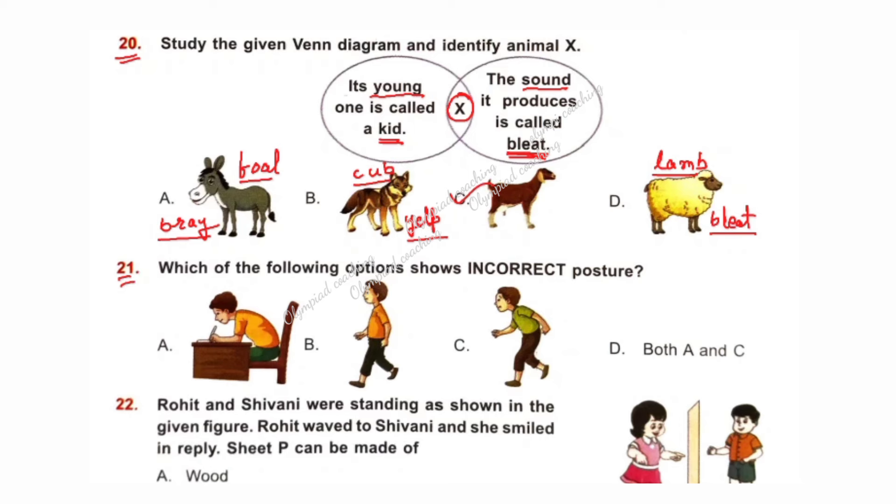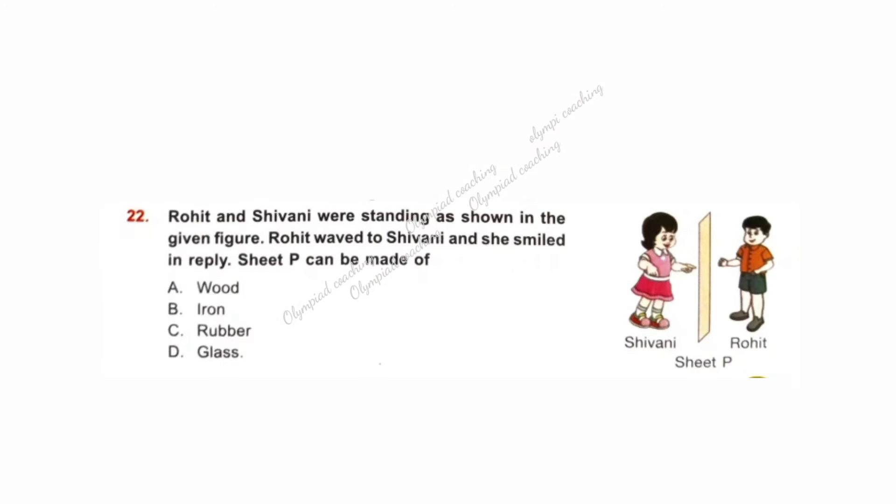Question number 21. Which of the following options shows incorrect posture? Option A and C incorrect. According to this, option D is correct: Both A and C. B is a correct posture. Question number 22. Rohit and Sivani were standing as shown in the given picture. Rohit waved to Sivani and she smiled in reply. Sheet P can be made of? Option D is correct: Glass. Both Sivani and Rohit could see each other. So, sheet P must be transparent. And glass is transparent. Option D is correct.